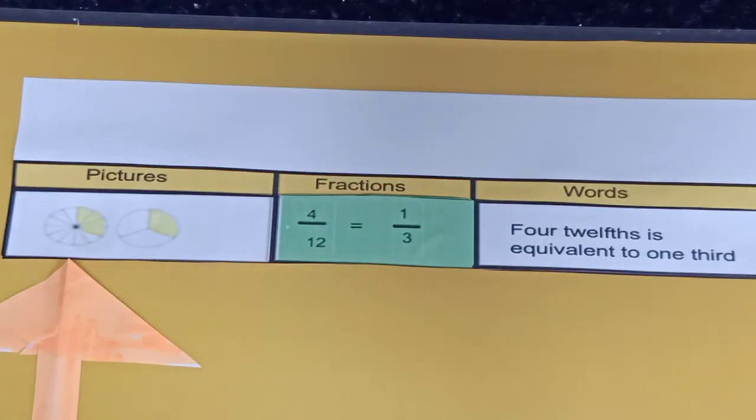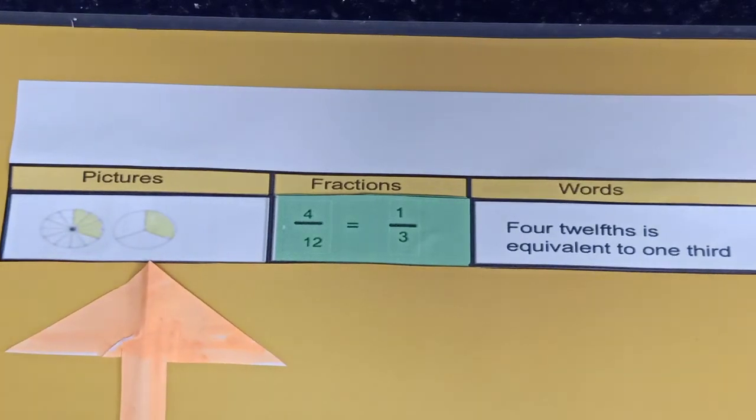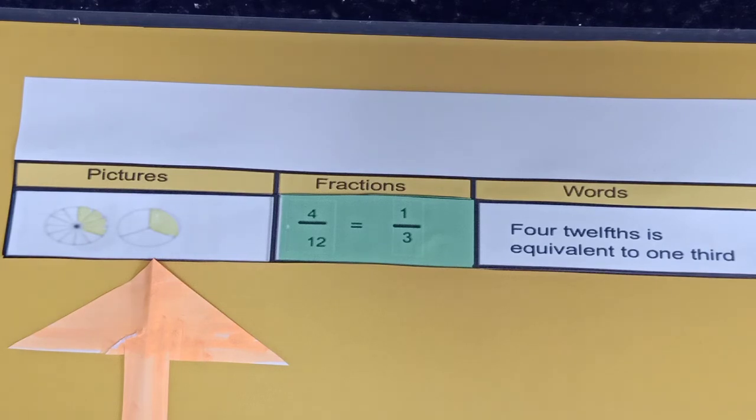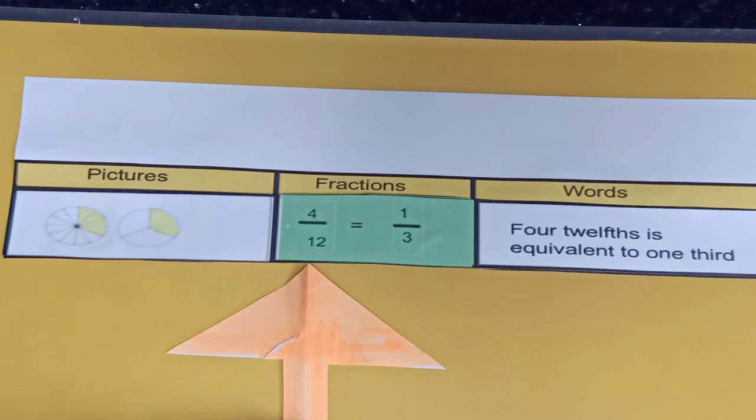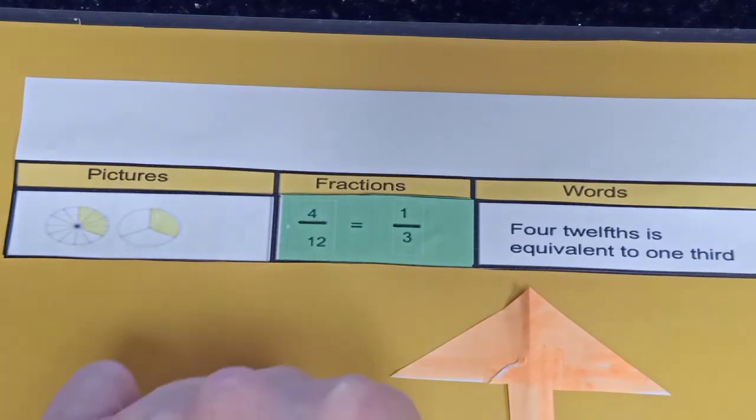Okay, we're going to look at another set of equivalent fractions. On the far left again, you can see a circle shape. It's been divided into 12 equal pieces, and 4 of them are highlighted. So that fraction is 4 twelfths. When we move over here, you can see it's a circle again. It's divided into 3 equal pieces, and that fraction is 1 third. If you look at it numerically, you have 4 twelfths equal to 1 third. And if you look at it in terms of words, it looks like this: 4 twelfths is equivalent to 1 third.